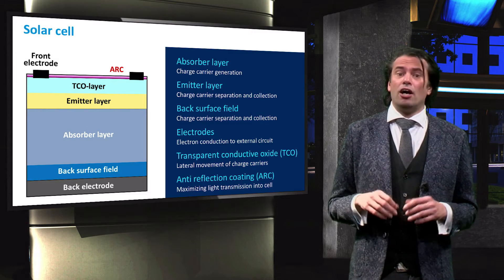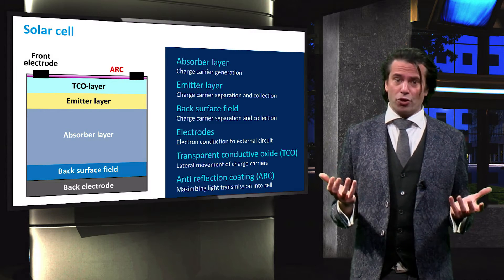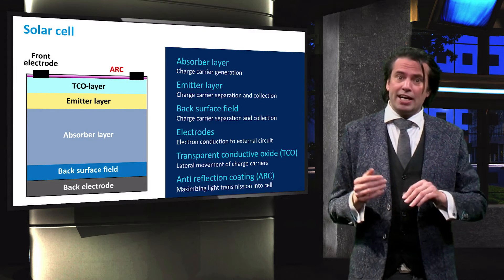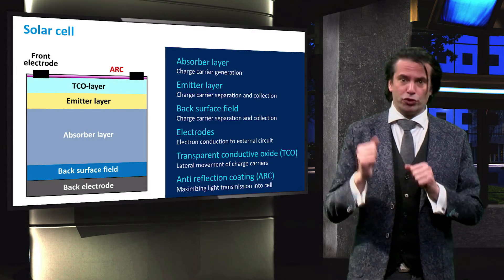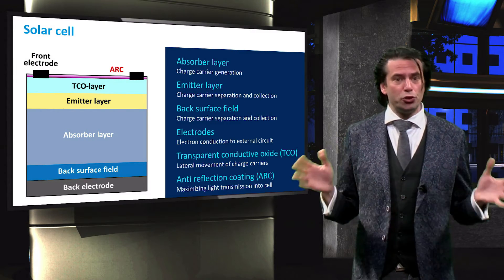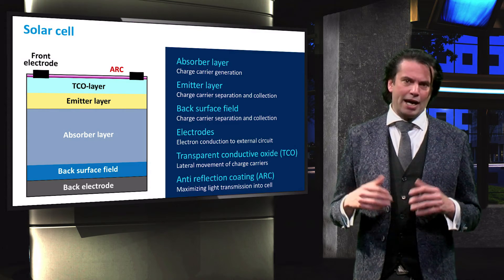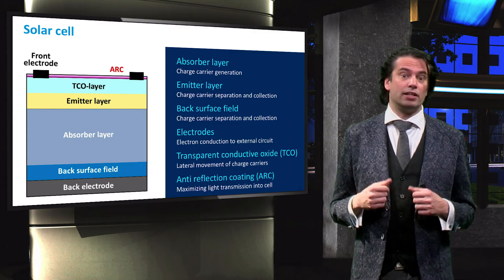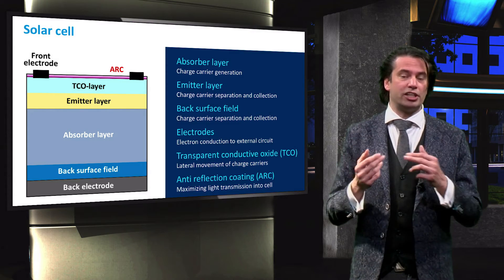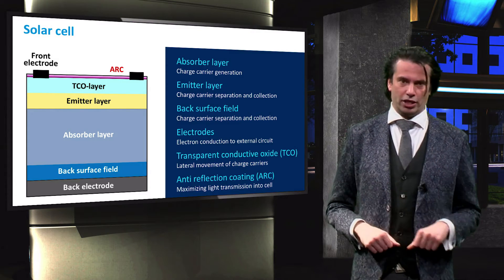Finally, an anti-reflection coating is placed at the front of the solar cell to reduce the front surface reflection and maximize the light transmission into the cell.